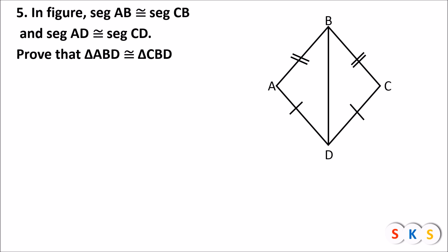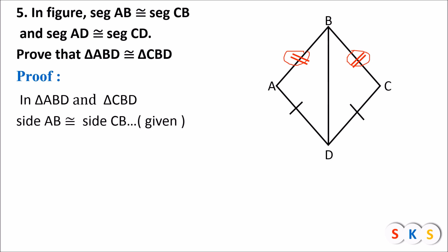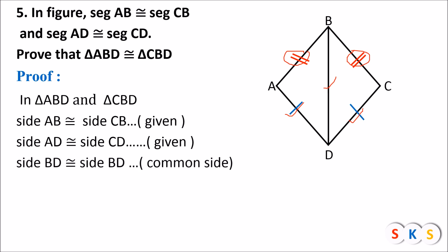In triangle ABD and triangle CBD: side AB and side CB got a same kind of mark, therefore side AB is congruent to side CB. Side AD and side CD got a same kind of mark, therefore side AD is congruent to side CD. Seg BD is a common side of both triangles, therefore side BD is congruent to side BD. Therefore triangle ABD is congruent to triangle CBD by SSS test.